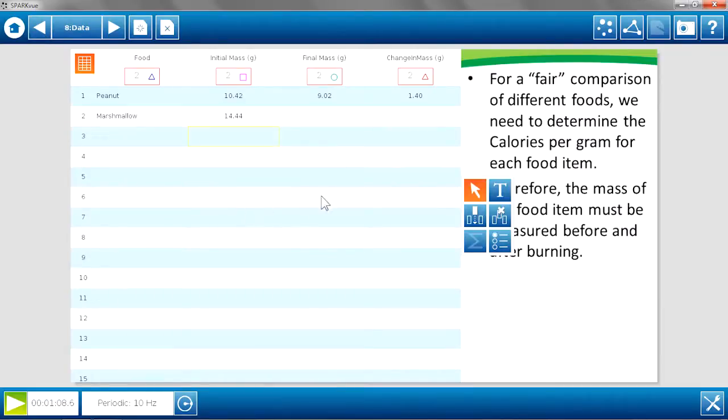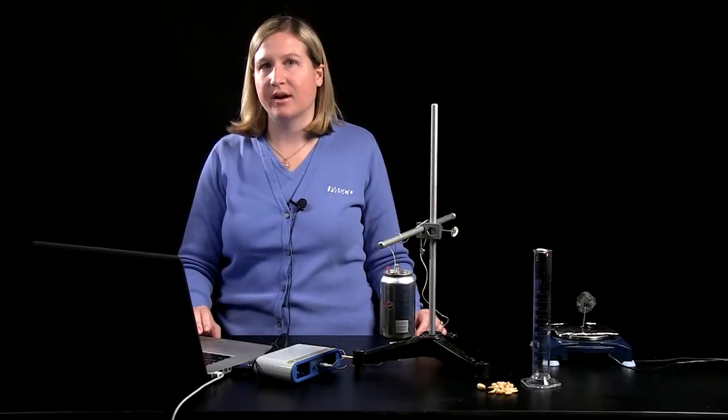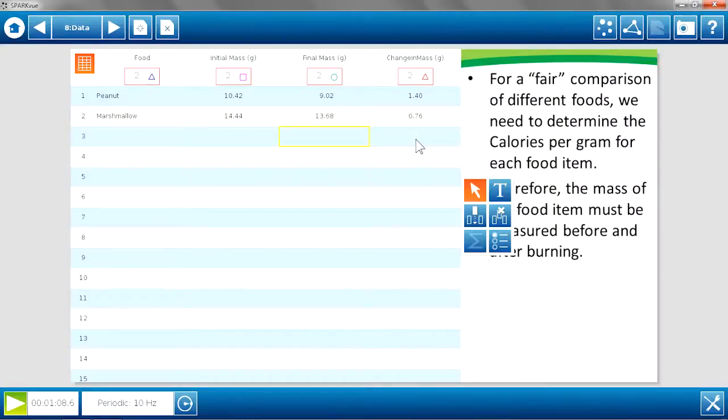Place the food and holder again all together on the balance. And I'm going to return to my data table for collecting data on mass and type in the final mass here, 13.68 grams. And I'm using a data table in which the third column change in mass automatically calculates the difference between the initial and final masses. SparkView software has a calculator option and I use that to create an equation that will find the difference.